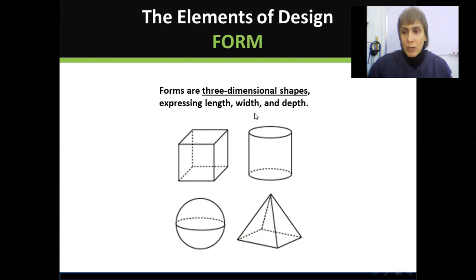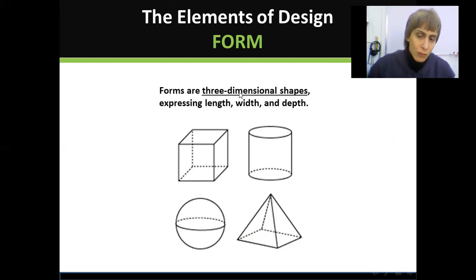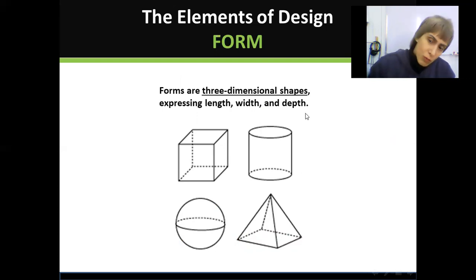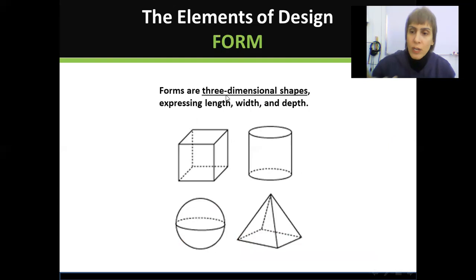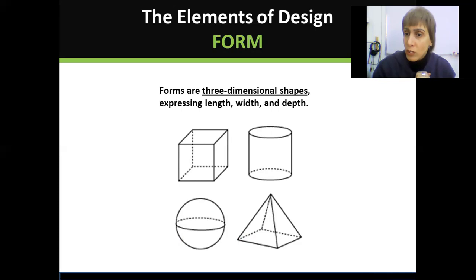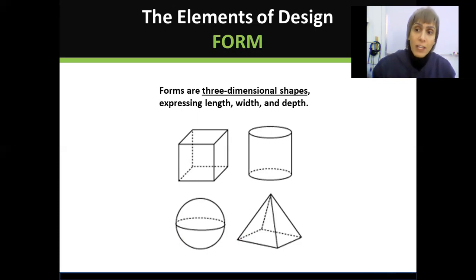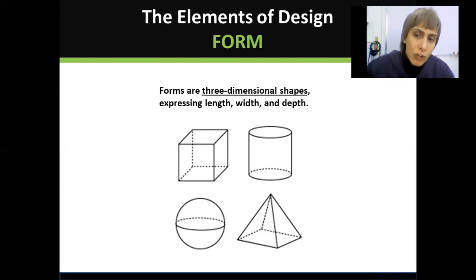We talked about shape; now we will discuss form. What is the difference between shape and form? Shapes are two-dimensional — flat, 2D objects. Forms are 3D, three-dimensional shapes.